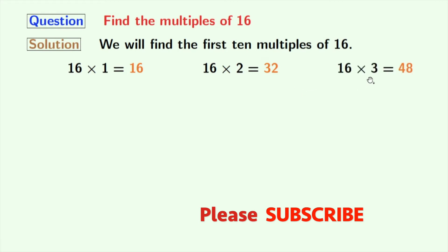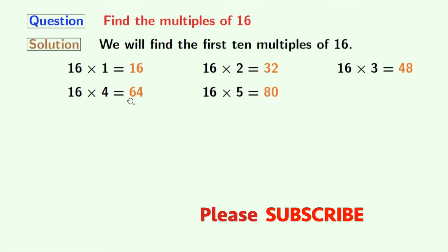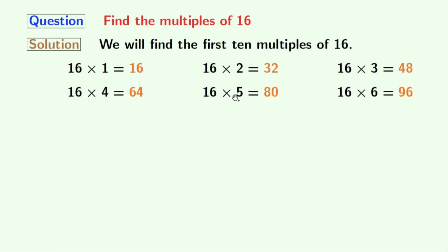The next number is 3 and multiplying 16 with 3, we get 48. Multiplying 16 with 4, we get 64. Next, multiplying 16 with 5, we get 80.